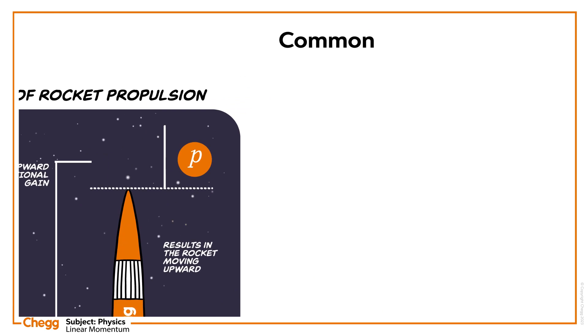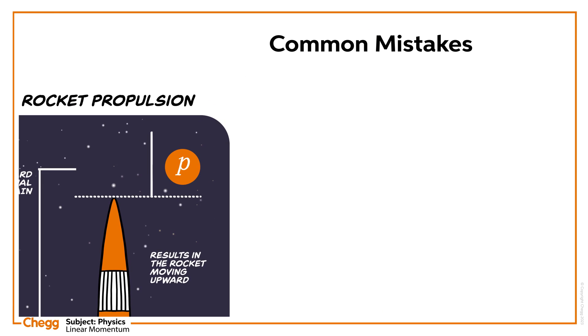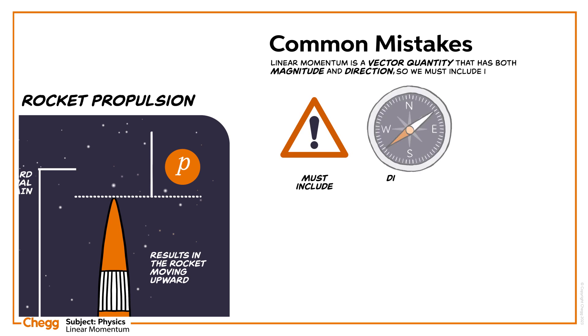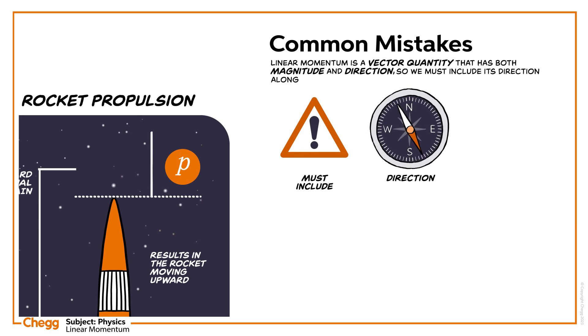Let's discuss some potential mistakes. Linear momentum is a vector quantity that has both magnitude and direction, so we must include its direction along with the magnitude.